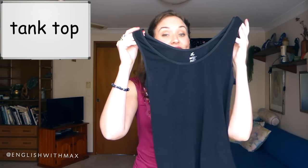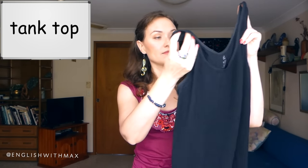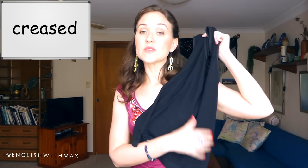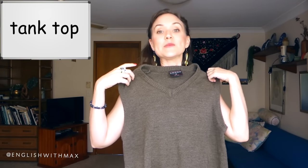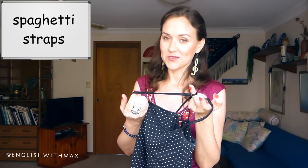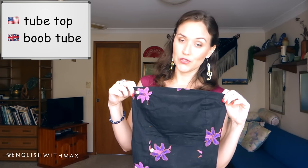Now I want to talk about the term 'tank top'. In the US, this is a tank top — it doesn't have any sleeves, it's quite tight and casual. In the UK, a tank top is actually something different — it's a sleeveless knitted top. We usually call a top with very thin straps a camisole. Sometimes we call thin straps like this spaghetti straps. In the US, this type of strapless tube top is called a tube top. In the UK, it's called a boob tube.